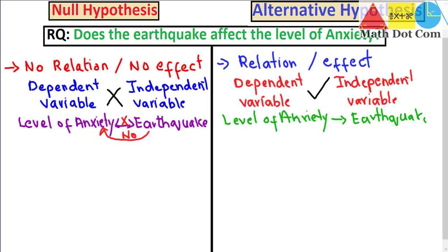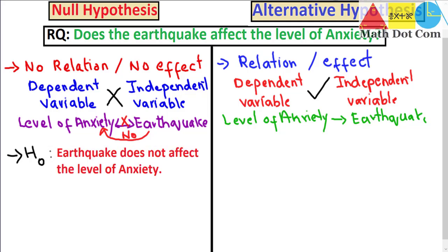When we write the null hypothesis statement, the null hypothesis is represented by H0. Its statement would be: 'Earthquake does not affect the level of anxiety.' Keep in mind that in a research question we have not yet proved or disproved any statement — we are just investigating whether the earthquake is affecting the level of anxiety. In the null hypothesis, we are essentially stating what the researcher is going to try to disprove.